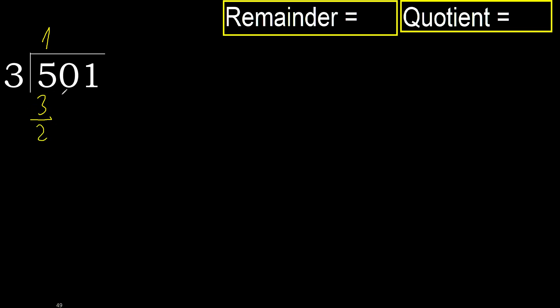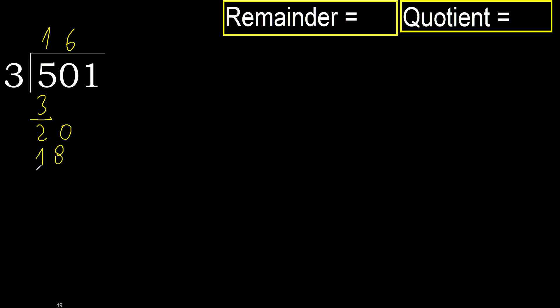Subtract, next — 20. 3 multiply by 7 is 21, which is greater. 3 multiply by 6 is 18, which is not greater. Ok.